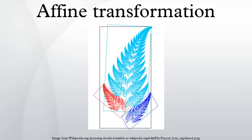In affine coordinates, which include Cartesian coordinates in Euclidean spaces, each output coordinate of an affine map is a linear function of all input coordinates. Another way to deal with affine transformations systematically is to select a point as the origin. Then, any affine transformation is equivalent to a linear transformation followed by a translation.